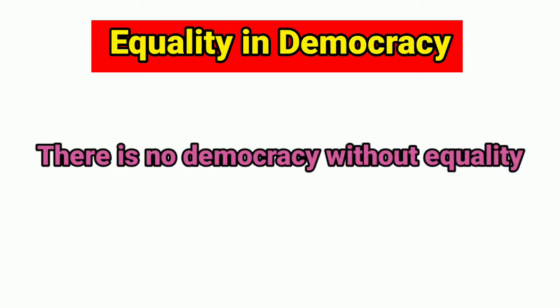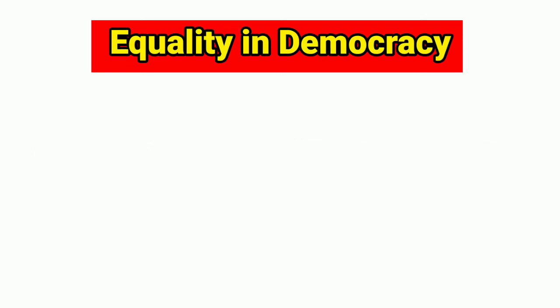In most democratic countries, all citizens are given equal rights, at least formally. The laws are usually the same for all citizens, and the rule of law ensures that nobody, not even the government, is above the law.